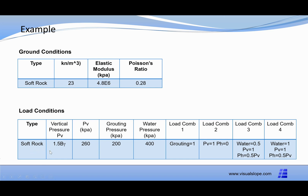The load conditions are as follows. The vertical pressure is 1.5B gamma, which equals 260 kPa. Grouting pressure is 200 kPa and water pressure is 400 kPa.